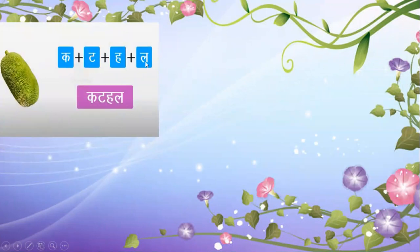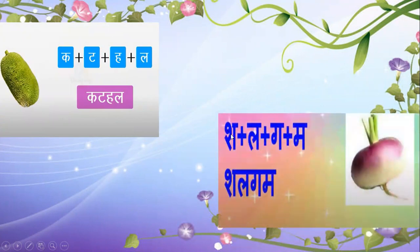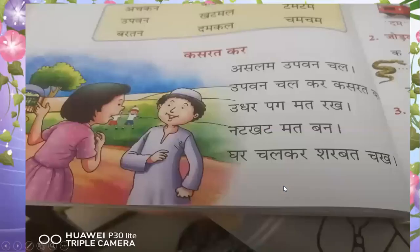Now we move to the next word — Kathal. Kya hai yeh Kathal? You can see the picture of Kathal. What is this? Jackfruit — yes, very good, Kathal means jackfruit. Next one is Shalgam. Kya hai yeh Shalgam? Shalgam means turnip. Kathal, Shalgam — these are all four-letter words.